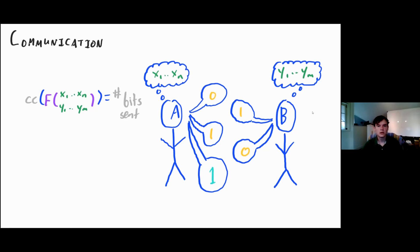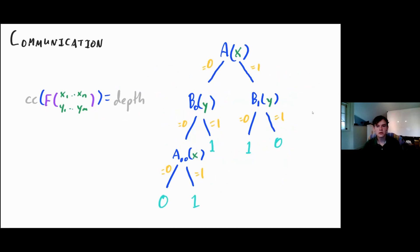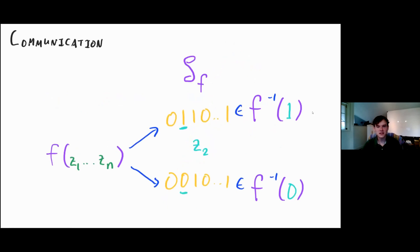Our other model is communication complexity. Here we have two sets of input variables: x1 to xn, held by Alice, and y1 to ym, held by Bob. These players can compute anything they want given what they know about the input. Since the function is on two sets of variables, they do have to talk to each other. Our measure of complexity is the number of bits they need to send in the worst case.